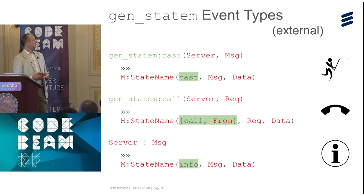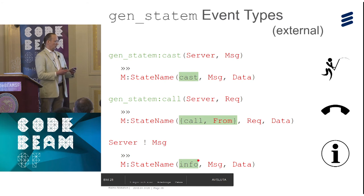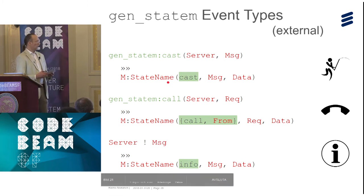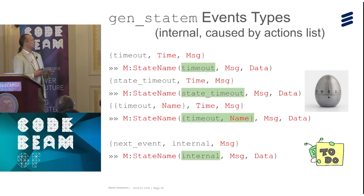The event types have a distinct server flavor: there are casts, calls, and infos. This slide shows the state-specific callback only. But there are more event types — these are called by actions you perform yourself. So a timeout action will produce a timeout event. They have the same tag for the action as for the event type.